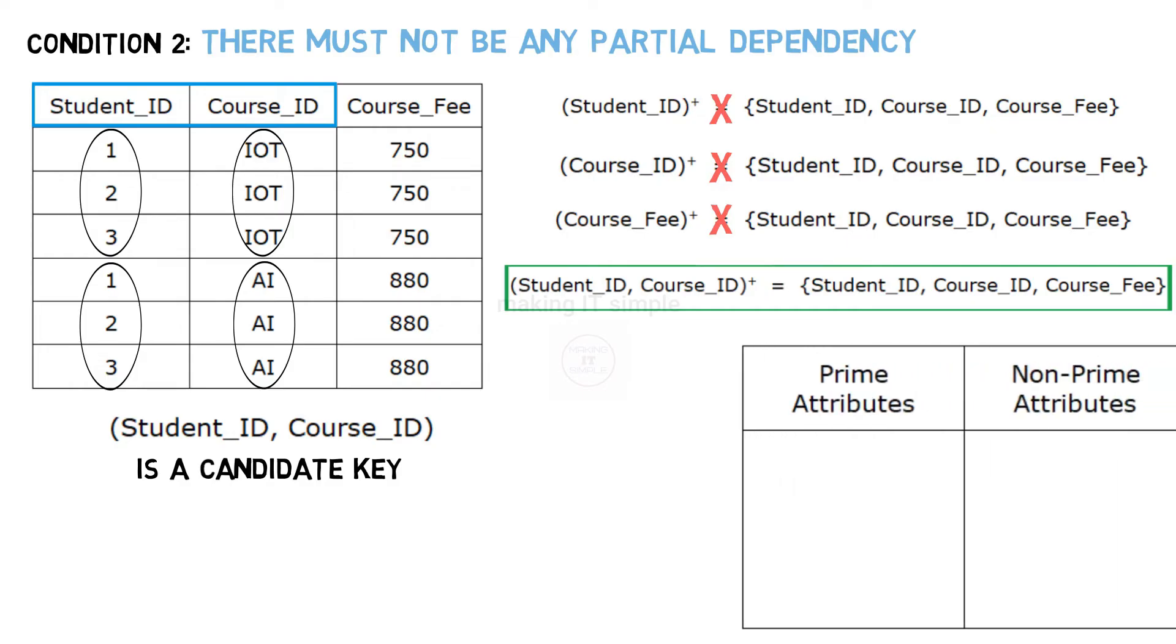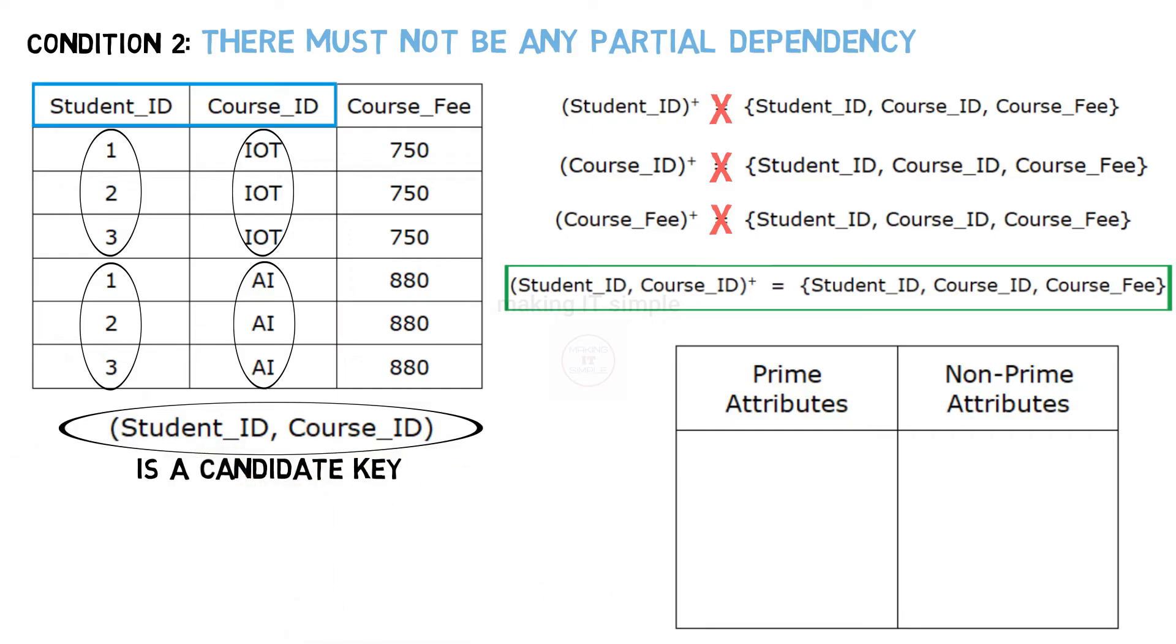Next step is to differentiate prime attributes and non-prime attributes. Prime attributes are attributes present in the candidate key. In our case student id and course id. Remaining all attributes which are not part of candidate key or candidate keys are non-prime attributes. In this case course fee is a non-prime attribute.